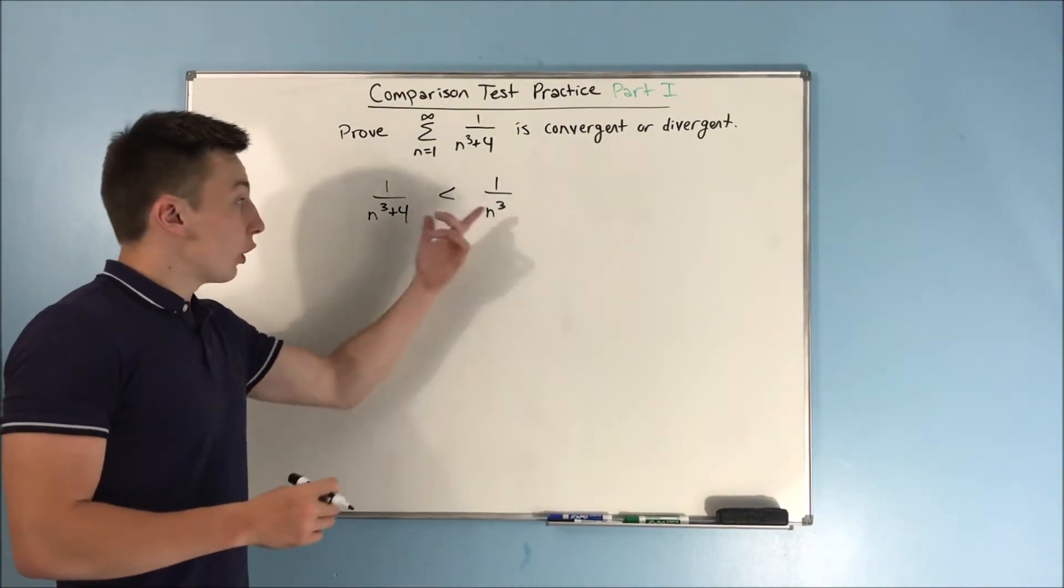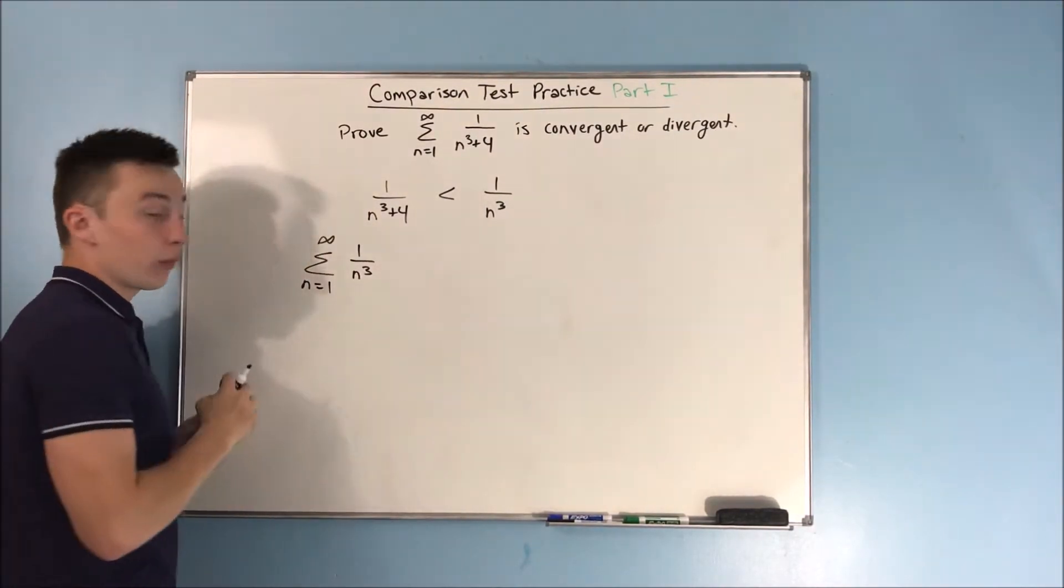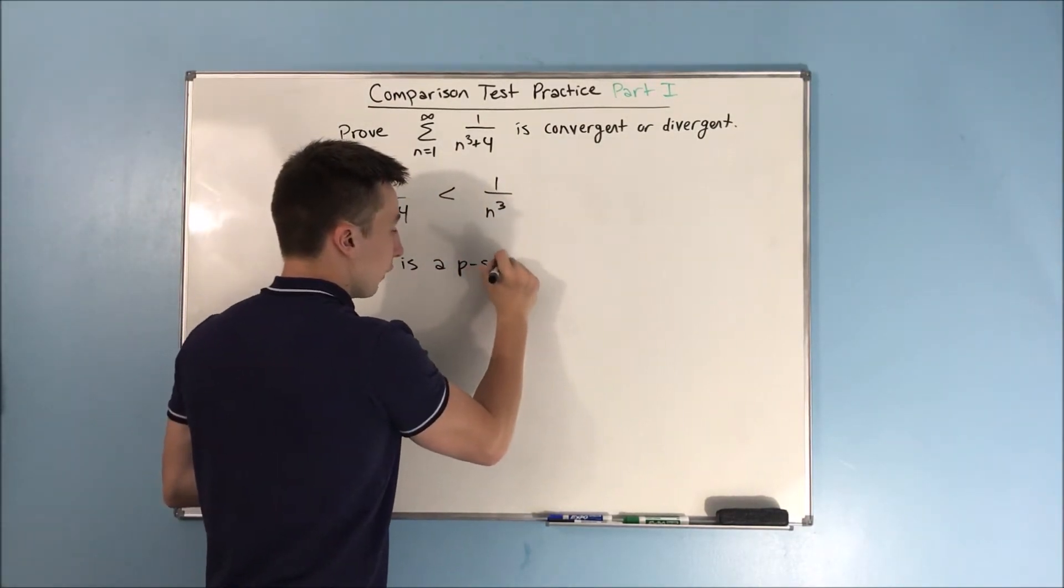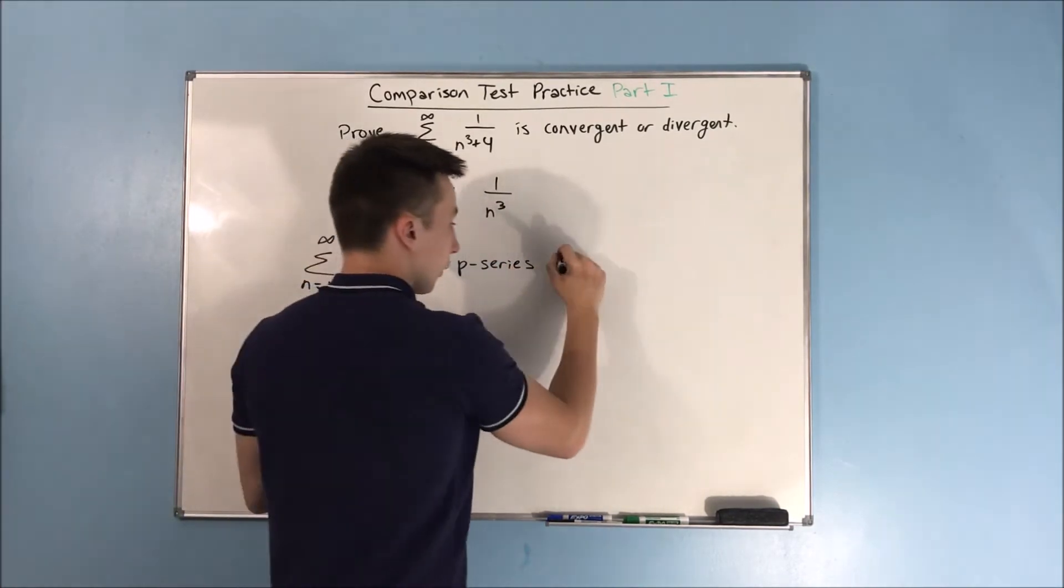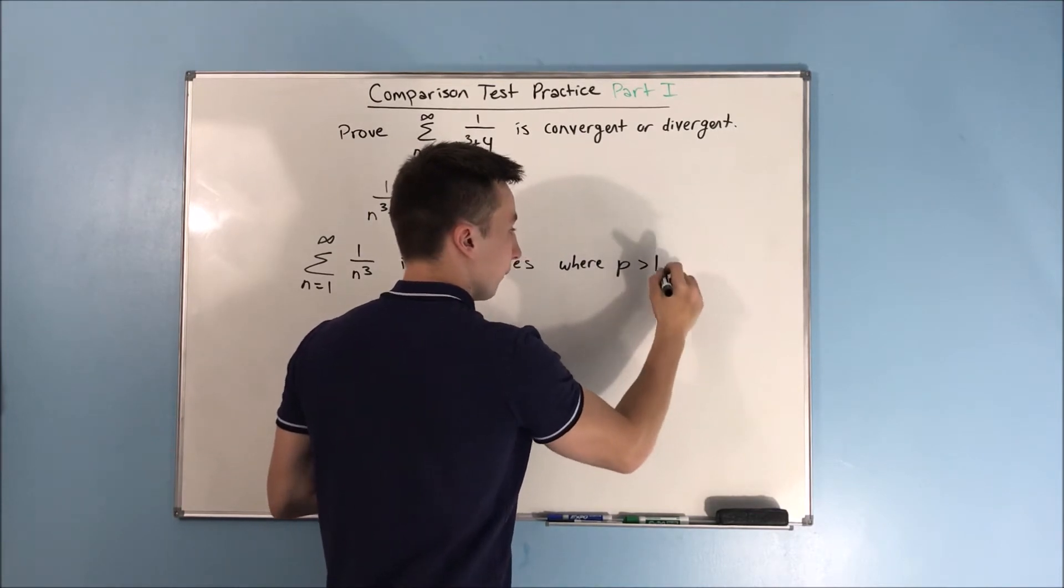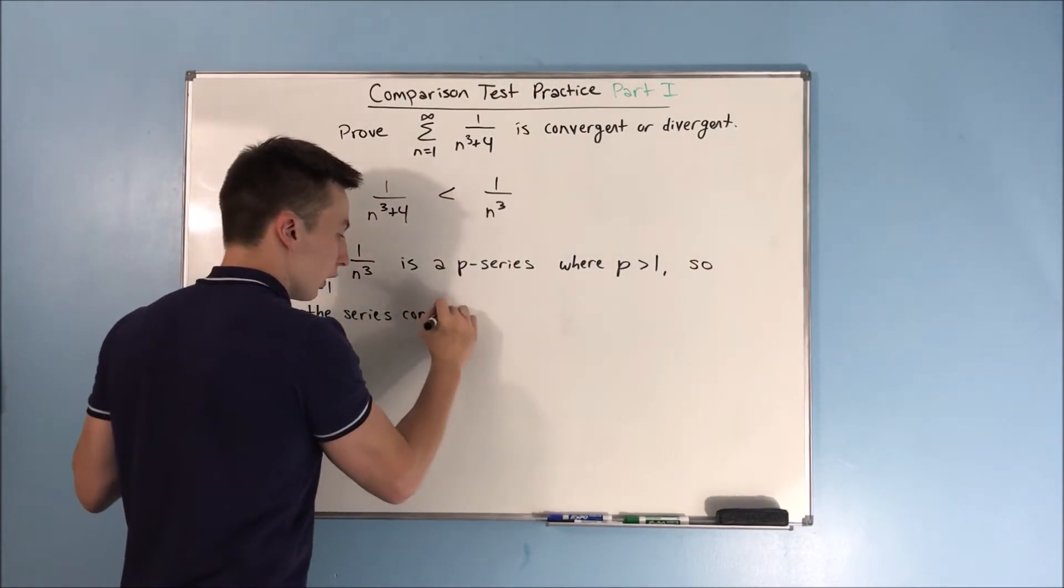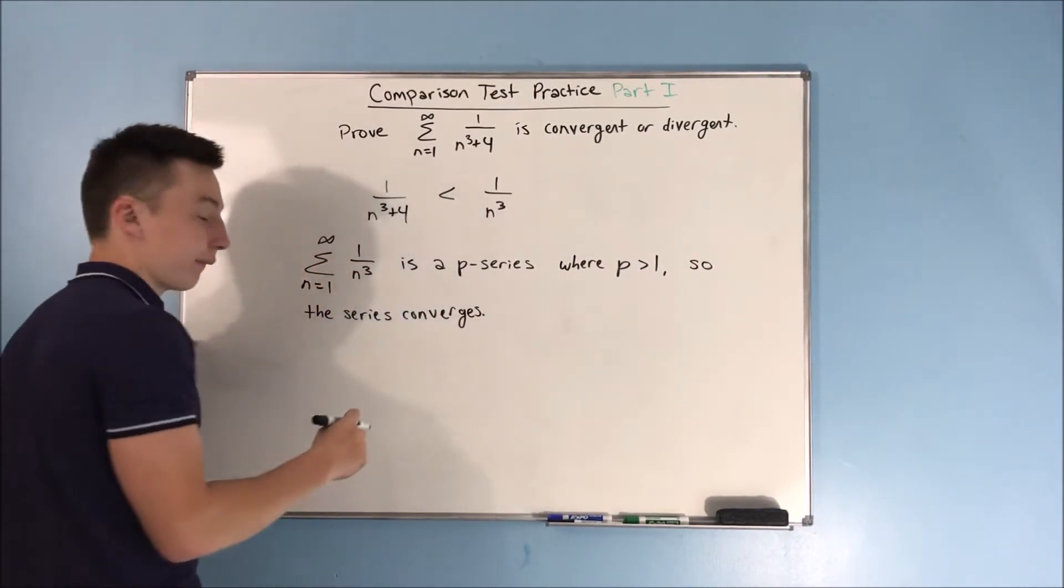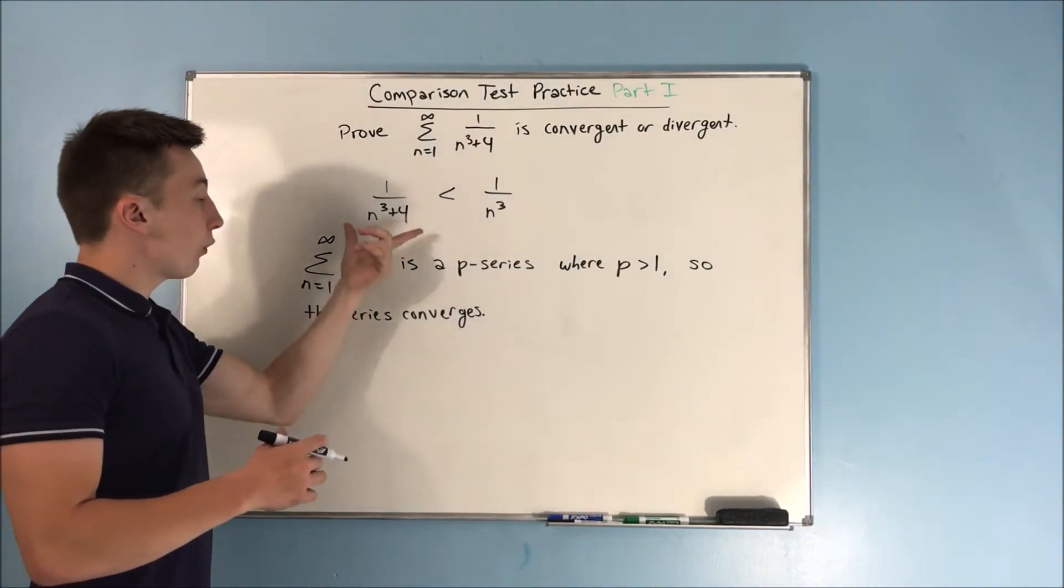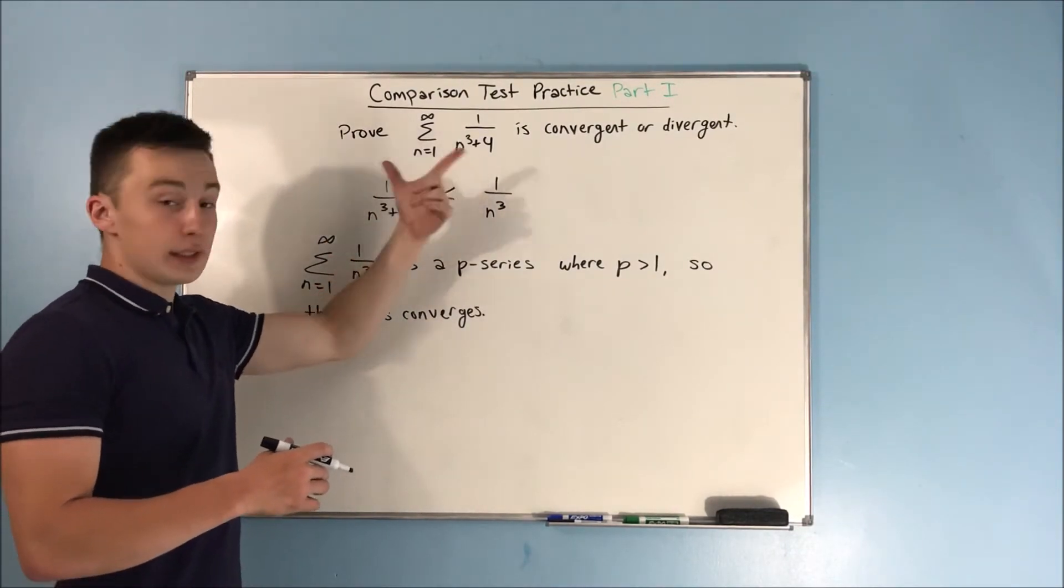Now that works out because we know that this sum from n equals 1 to infinity of 1 over n cubed is a p-series, where p is greater than 1, so the series converges. So then that means if this converges, and this is greater than 1 over n cubed plus 4, that by the comparison test, our series must converge.